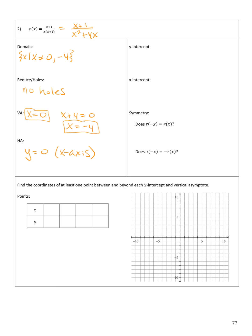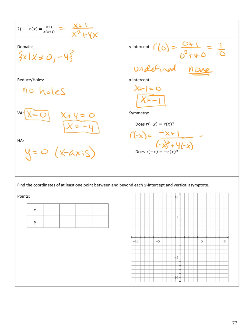To find a y-intercept, plug 0 in for x: we get 0 plus 1 over 0 squared plus 4 times 0, which is 1 over 0, which is undefined — so there is no y-intercept. To find x-intercepts, set the numerator equal to 0 and get x equals negative 1. For symmetry, r of negative x gives negative x plus 1 over x squared minus 4x, which is neither the same as nor the opposite of the original, so there is neither kind of symmetry.